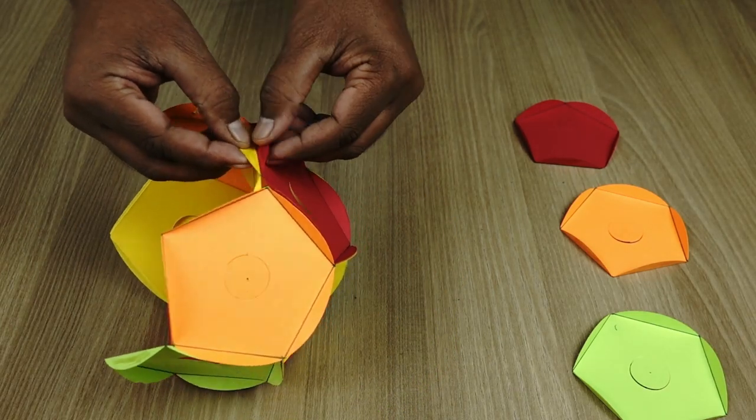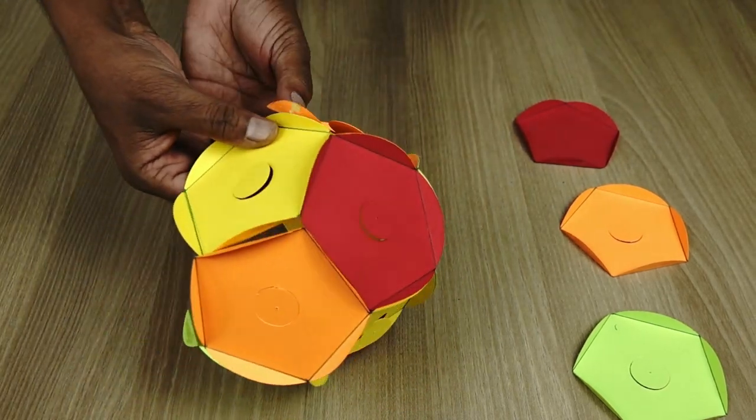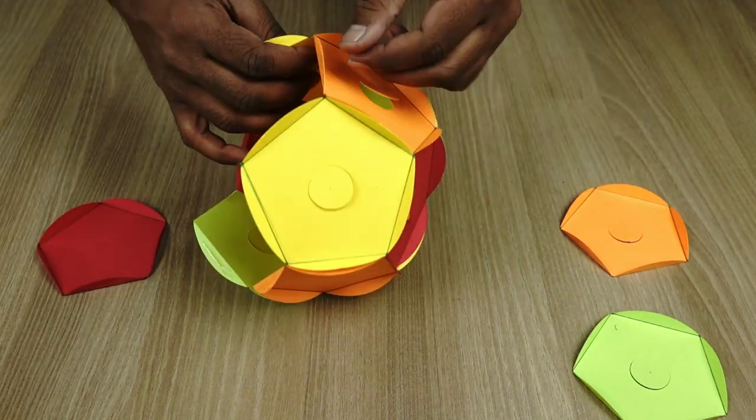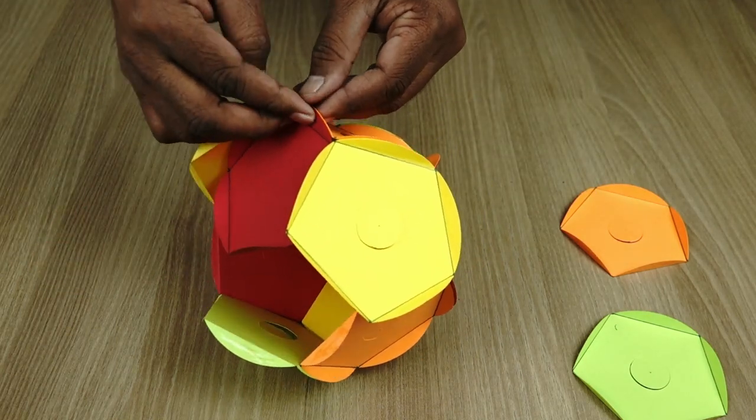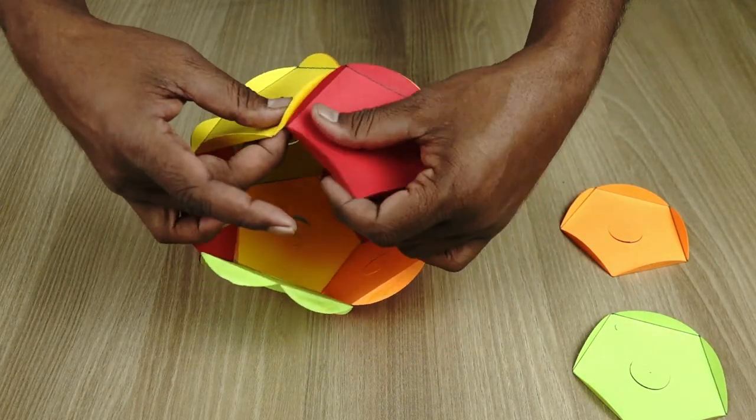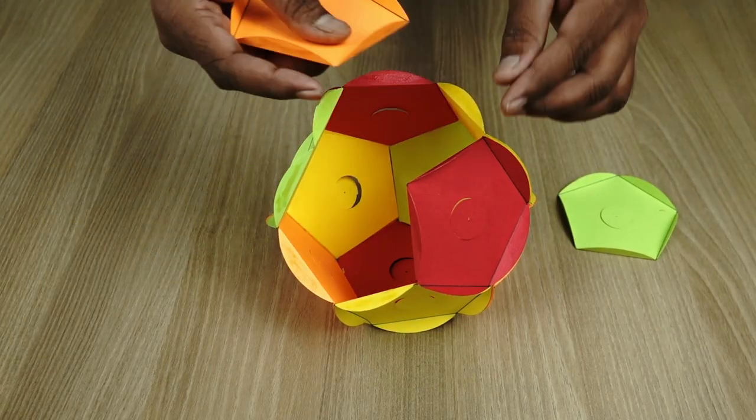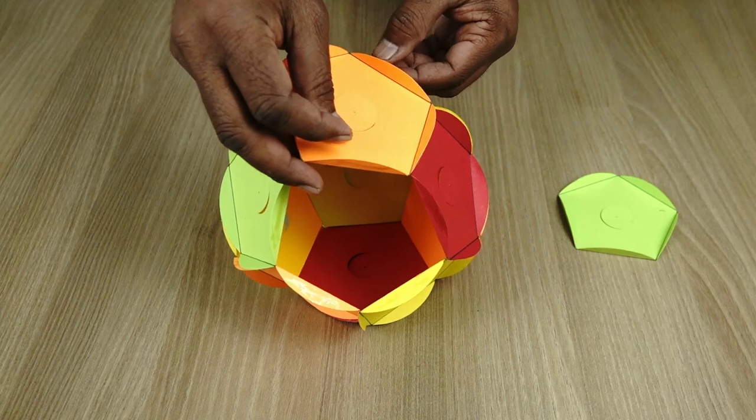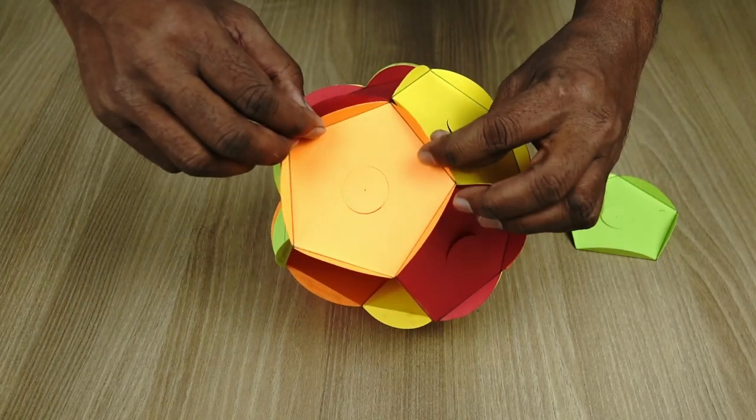Now one of the things you want to make sure is that since we are going to make a lantern you want to keep one of the sides empty. But you can also attach all the 12 sides and make this dodecahedron into a ball.